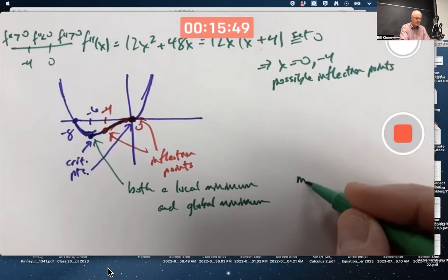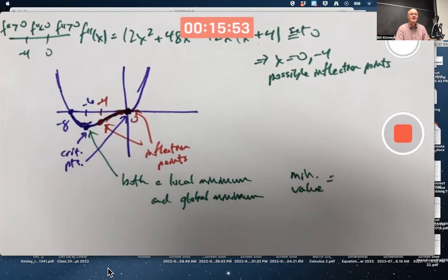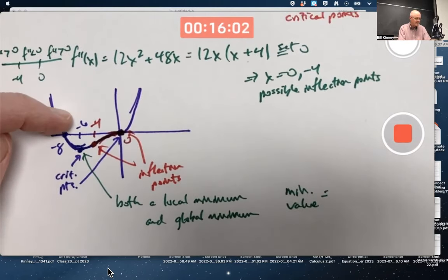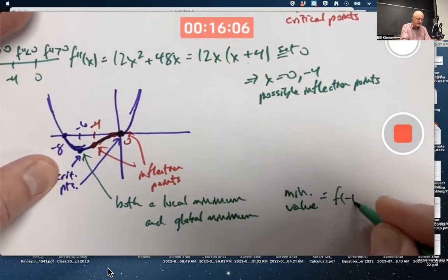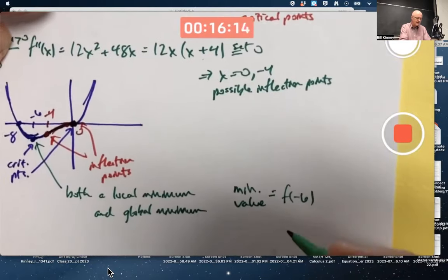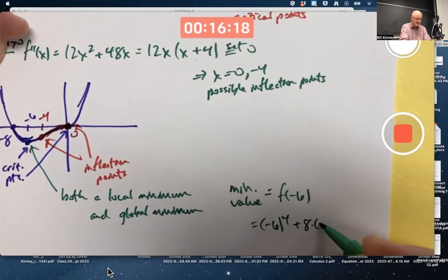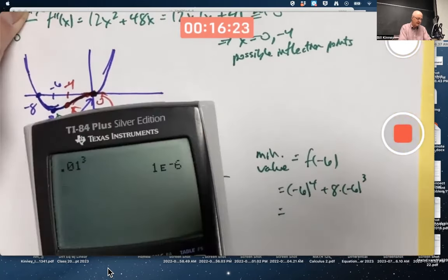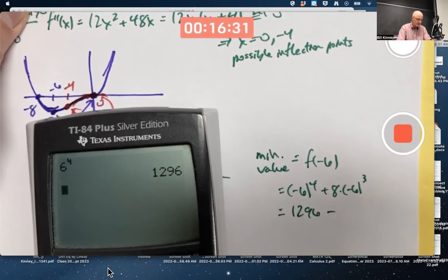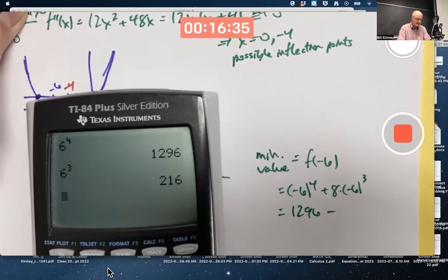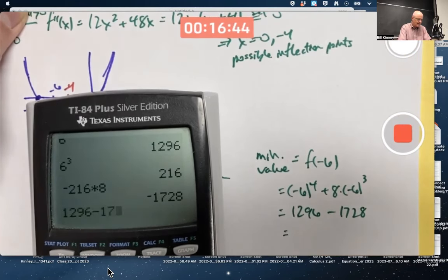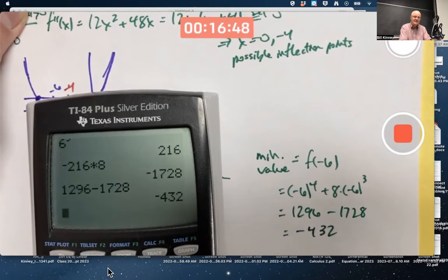What is the minimum value? This is related to an important application called optimization. To find the minimum value I need to plug in the critical point, negative 6, into the function: f of negative 6 equals negative 6 to the 4th plus 8 times negative 6 cubed. Negative 6 to the 4th is 1,296, and negative 6 cubed is negative 216, so 8 times negative 216 is negative 1,728. Adding gives a global minimum value of negative 432. That's the y-coordinate of the lowest point, which also tells us we need the y-axis scale to go down to at least negative 450 to graph this well.